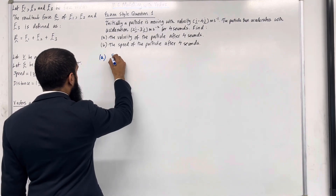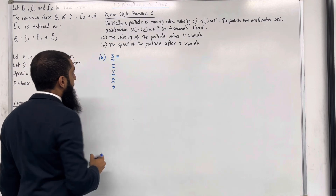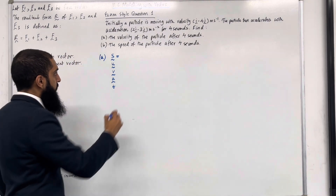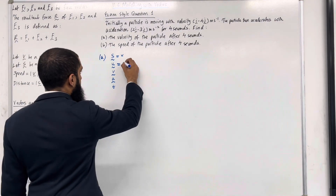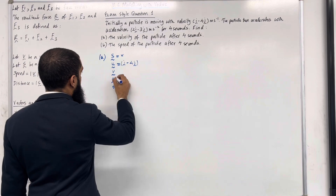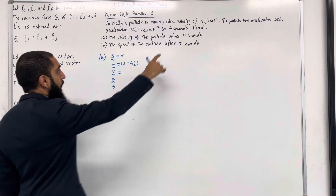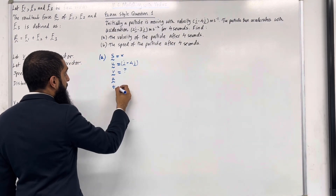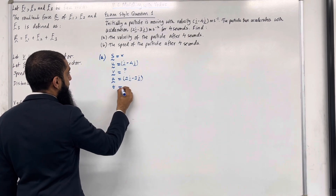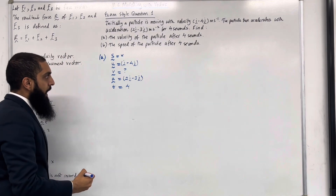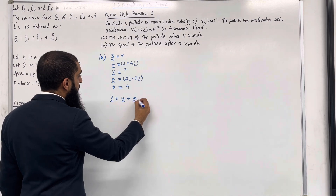I'm going to start by writing SUVAT. Do we have the displacement vector? No, we don't, so we can put an X there. The initial velocity vector U is i minus 4j. We are trying to work out the final velocity V — the velocity after 4 seconds — so question mark. The acceleration vector A is 2i minus 3j, and the time taken T is 4 seconds. Now to work out the final velocity V, we can use the SUVAT formula V equal U plus AT.